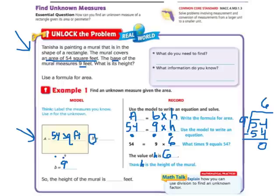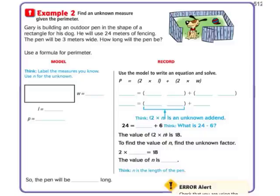We're going to skip the what if and the explain at the bottom of 511. Let's go to example 2 on page 512. Example 2 says Gary is building an outdoor pen in the shape of a rectangle for his dog. He will use 24 meters of fencing. That's the perimeter, right? Because that's what's going around. It's not the area inside the pen. So he's using 24 meters of fencing. The pen will be 3 meters wide. How long will it be?